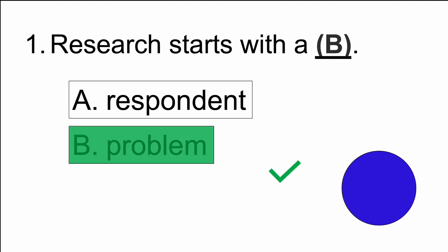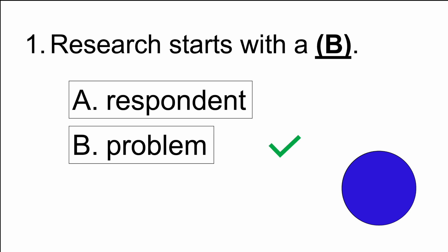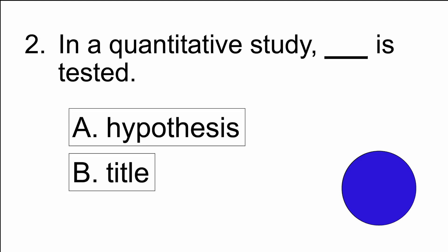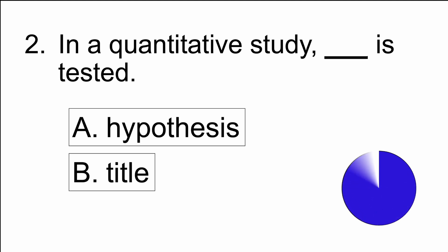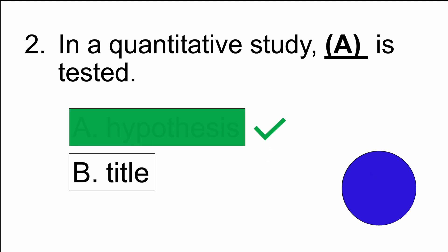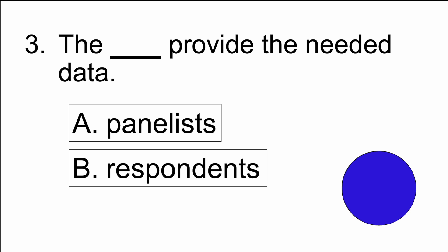The answer is B) problem. Number two: in a quantitative study, blank is tested — A) hypothesis, or B) title. The answer is A) hypothesis. Number three: the blank provides the needed data — A) panelists, or B) respondents.